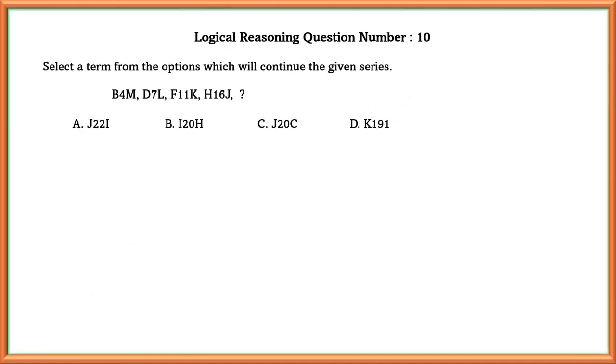Logical reasoning question number 10. Select a term from the options which will continue the given series. As we can see here, after skipping one letter from B, we will get D. Now moving on to the next letter. 4 plus 3 is equal to 7. So there is 7. And in M, they have given the predecessor of M, that is L.